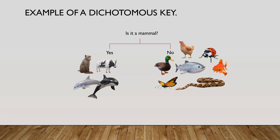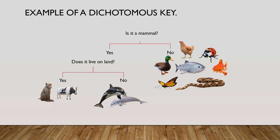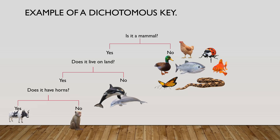Let's continue separating the mammals on the left. I can ask the question: does the mammal live on land? Again, there are two possible outcomes — yes, they live on land, or no they do not. If I continue with the monkey and the cow, I can ask another question: does the mammal have horns? Yes or no? At this point, the cow and the monkey are in their own group.